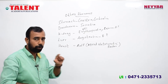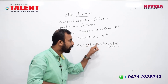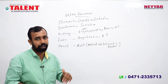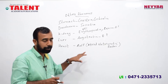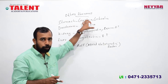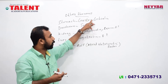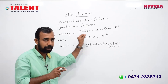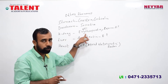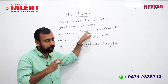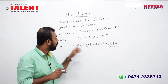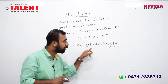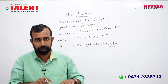The heart produces a hormone called ANF — Atrial Natriuretic Factor. ANF is the atrial natriuretic factor. The main function of ANF is to reduce blood pressure. It is the first hormonal function of the heart.